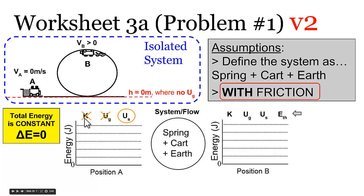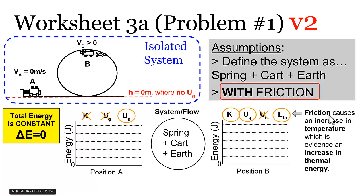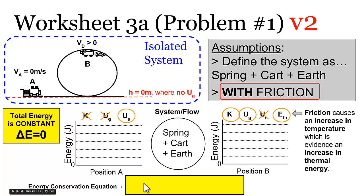At position A, there's still no kinetic energy or gravitational potential energy — only spring potential energy. At position B, there's still kinetic energy because the car is moving, and gravitational potential energy because the car is above a height of zero. There's no more spring potential energy since the spring is relaxed. But with friction, there is some thermal energy, because friction causes an increase in temperature between rubbing surfaces, which is evidence of increased thermal energy. So our energy conservation equation becomes: spring potential energy equals kinetic energy plus gravitational potential energy plus thermal energy.